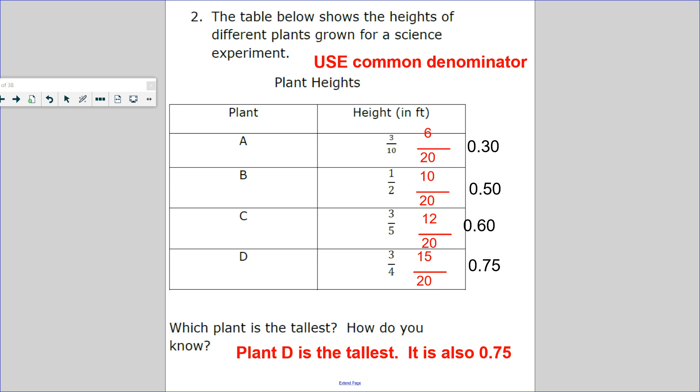You can turn it to a decimal, you can use common denominator. Which plant is the tallest? How do you know? Some people like using common denominator. So what do 10, 2, 5, and 4 all share in common? 20.